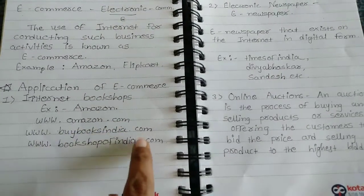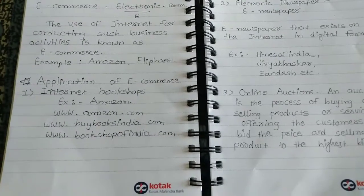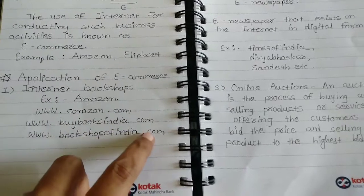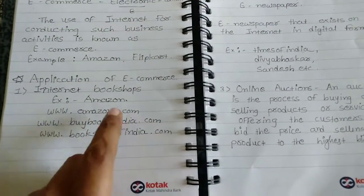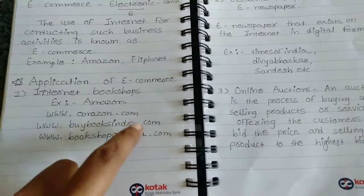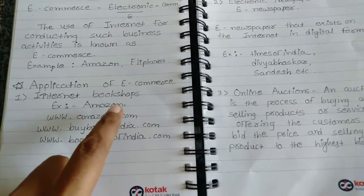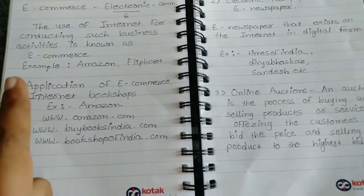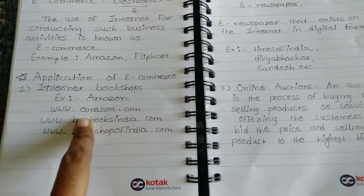You can see the domain name .com — it means all these websites are used for commercial activity, that's why they use .com. So these all websites are for online bookshop, and that is one of the first applications of e-commerce.